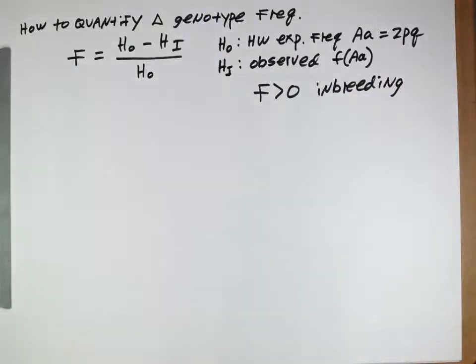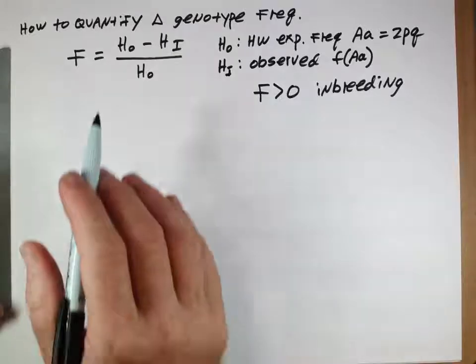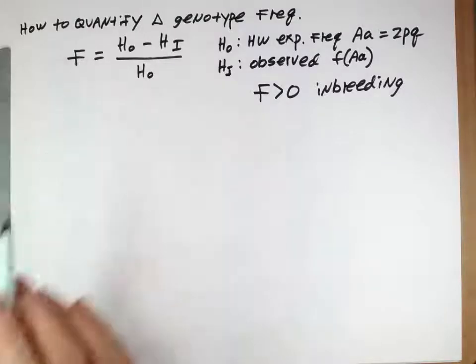Positive assortative mating. And you would get a negative value here if you had negative assortative mating leading to more heterozygotes than you would expect based on Hardy-Weinberg equilibrium. So this is just a definition. We're using this value F to represent the discrepancy between observed and expected frequencies of heterozygotes.